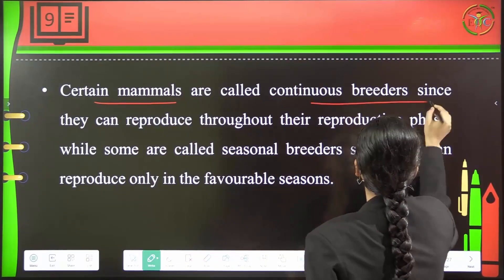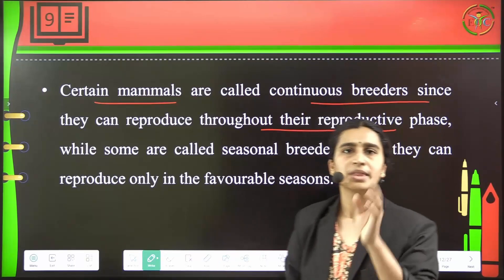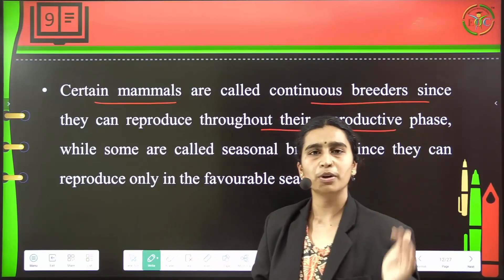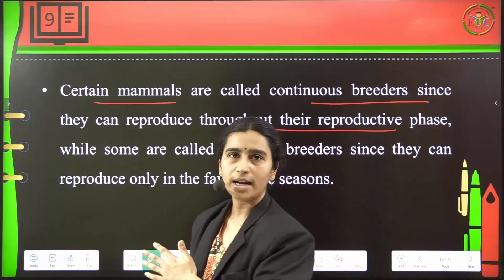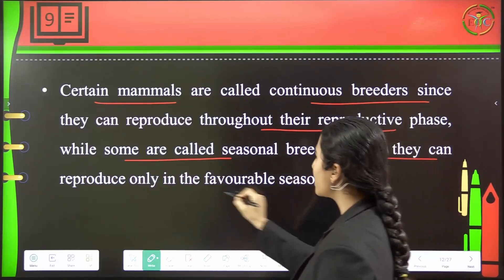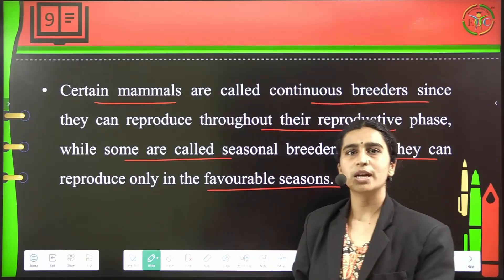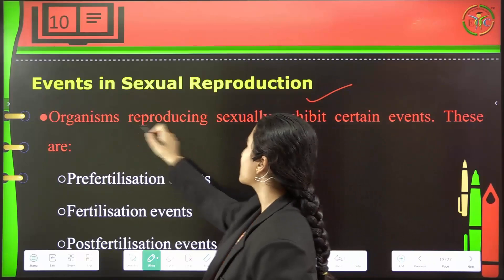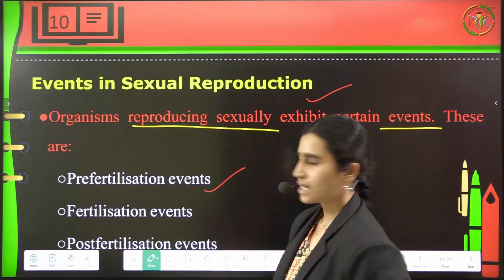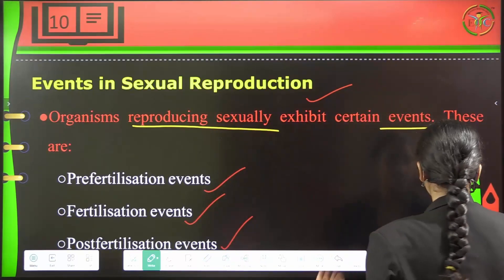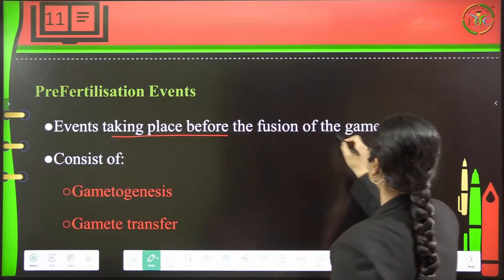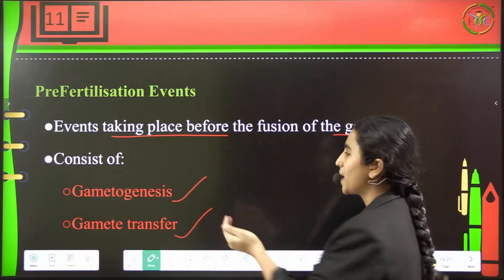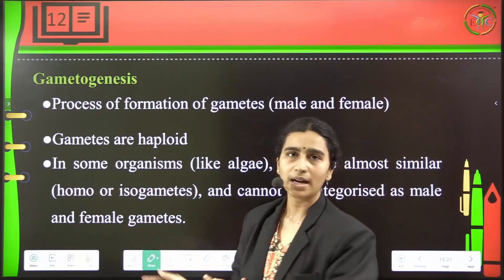Certain mammals are called continuous breeders because they can reproduce throughout their reproductive phase. While some are called seasonal breeders because they can reproduce only in favorable seasons. The events involved in sexual reproduction are: pre-fertilization events, fertilization events, and post-fertilization events. Pre-fertilization events take place before the fusion of gametes and consist of gametogenesis and gamete transfer. The formation of gametes is called gametogenesis, and the transfer of gametes from one organism to their partner is called gamete transfer.